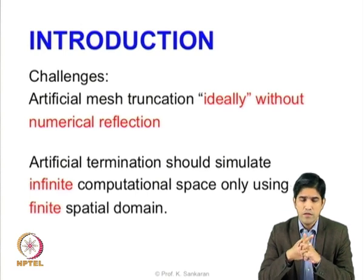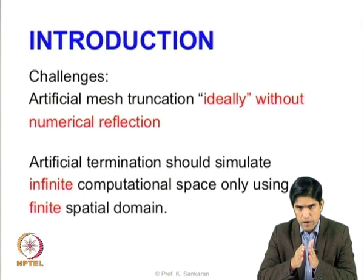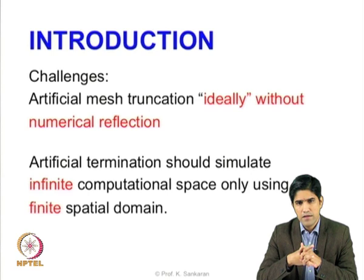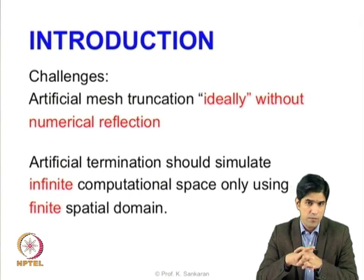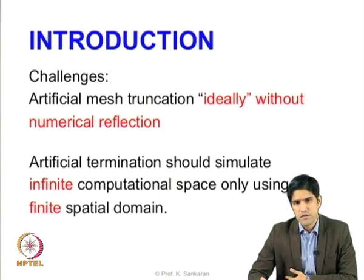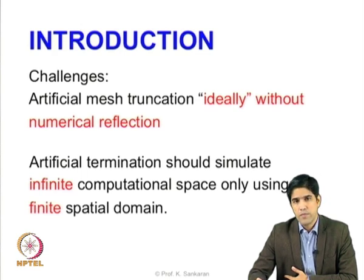Without doing this, we would expand the computational domain quite large for a problem where our real area of interest is very small. If we make the boundary conditions perfect, we can make them as close as possible to the domain of interest so that our finite space is as limited as possible. As we will see, there is no perfect boundary condition — we have to accept certain limitations for practical implementation.